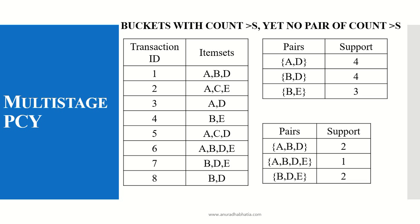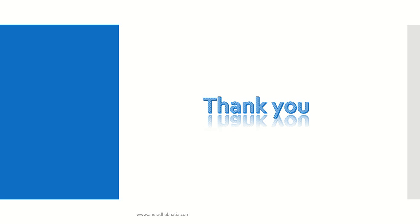ABDE, ABD, or BDE are false positives because as pairs their support is less than the threshold and they must be rejected. However, when we consider individual item sets, they are present in our table with proper support. This is how the multi-stage PCY algorithm works to identify false positives in the item table.